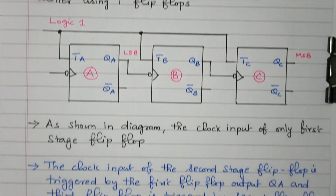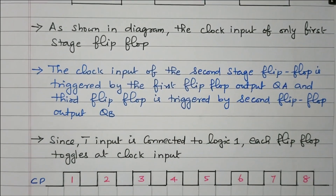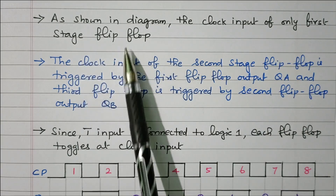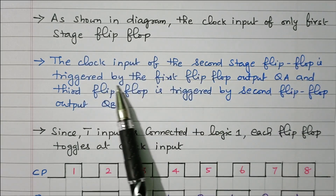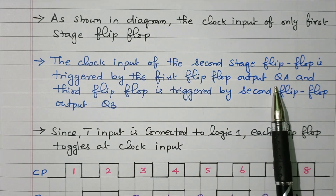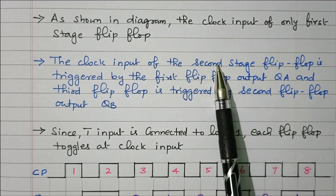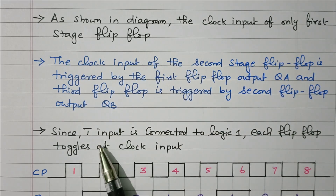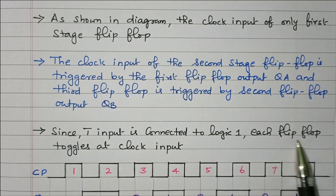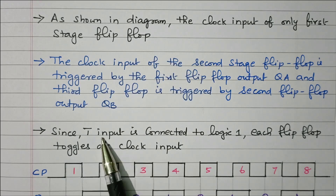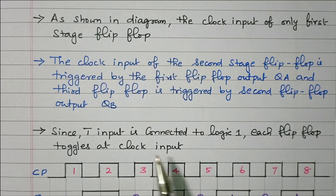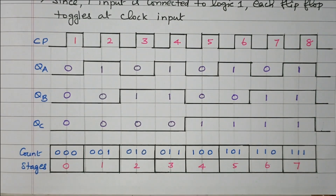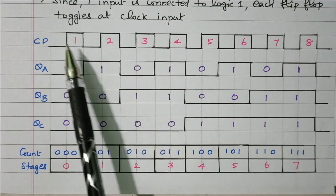Now we'll see the clock diagram to verify we are getting 3-bit binary output. The clock input of only the first flip-flop stage receives the external clock. The second flip-flop is triggered by QA, and the third flip-flop is triggered by QB. Since T input is connected to logic 1, each flip-flop toggles on its clock input. For a 3-bit counter, 2 to the power 3 gives 8 outputs, from 0 to 7.